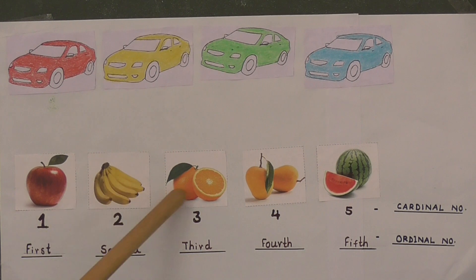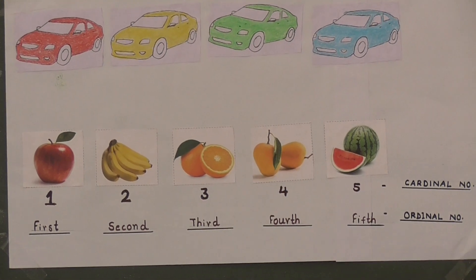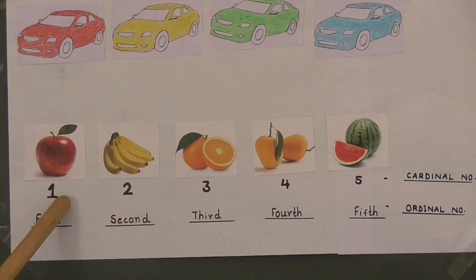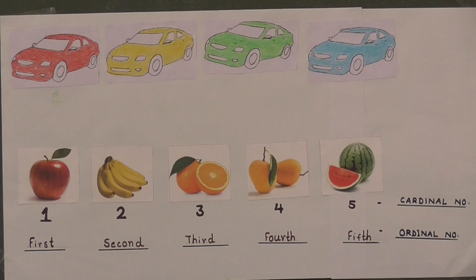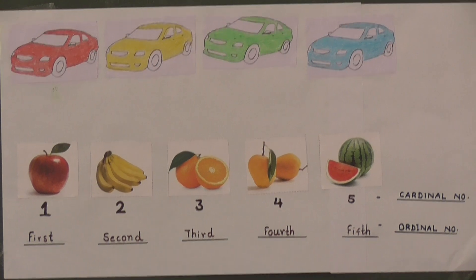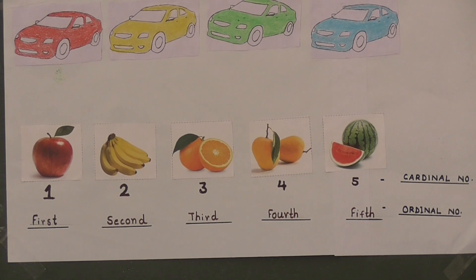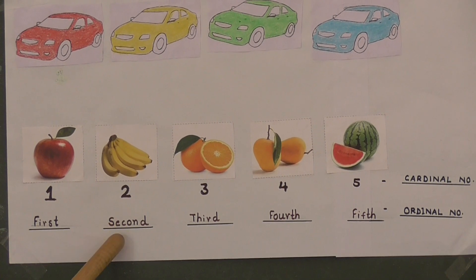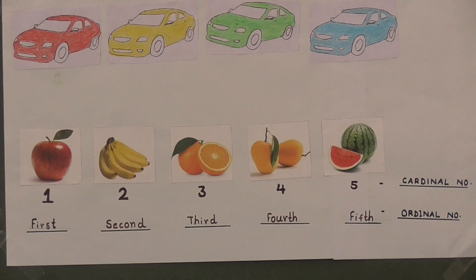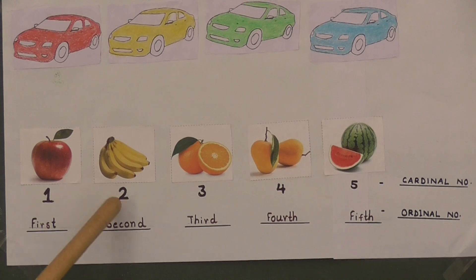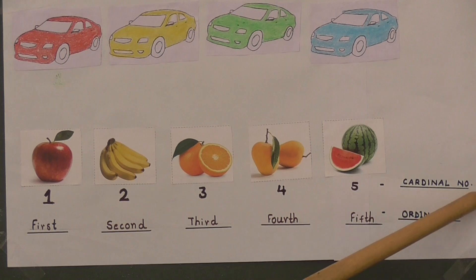Here you can see a picture of some fruits. Let's count them: 1, 2, 3, 4, 5. Now let's find out the position: 1, 2, 3, 4, 5. The numbers 1, 2, 3, 4, 5 are Cardinal Numbers.